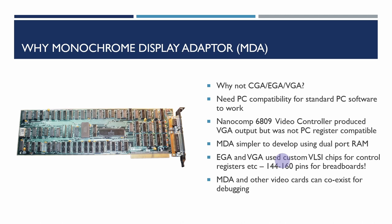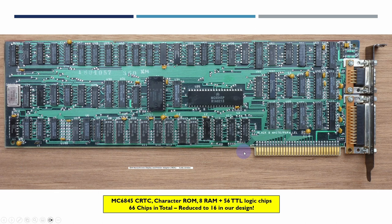The MDA adapter can coexist with other video cards, so it's useful for debugging. This is a high-res picture of the original full-length monochrome display adapter, which included a parallel port as well as the video card. It used the Motorola 6845 video controller chip, plus a character generator ROM. There were about 66 chips in total — around eight RAM chips plus 56 TTL logic chips. We've been able to reduce this down to about 16 chips in our design.